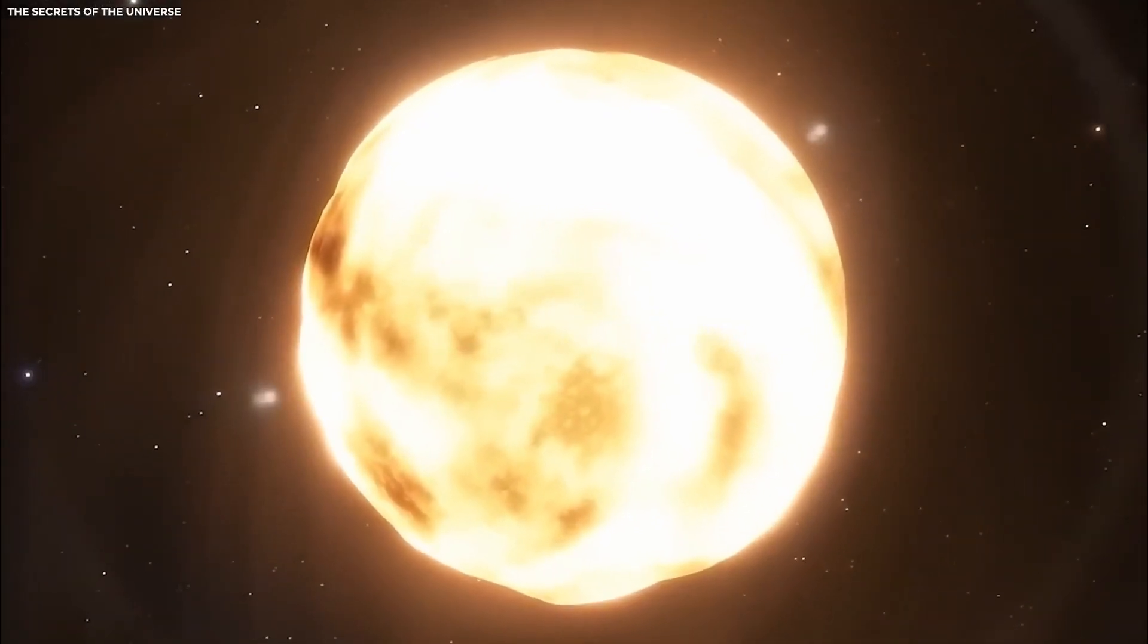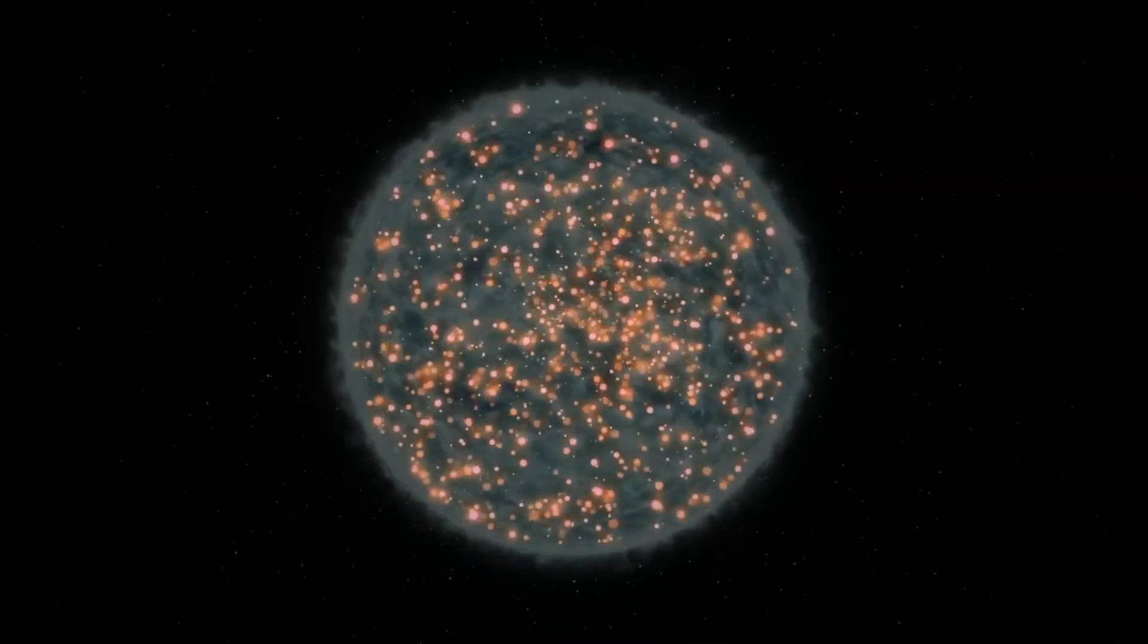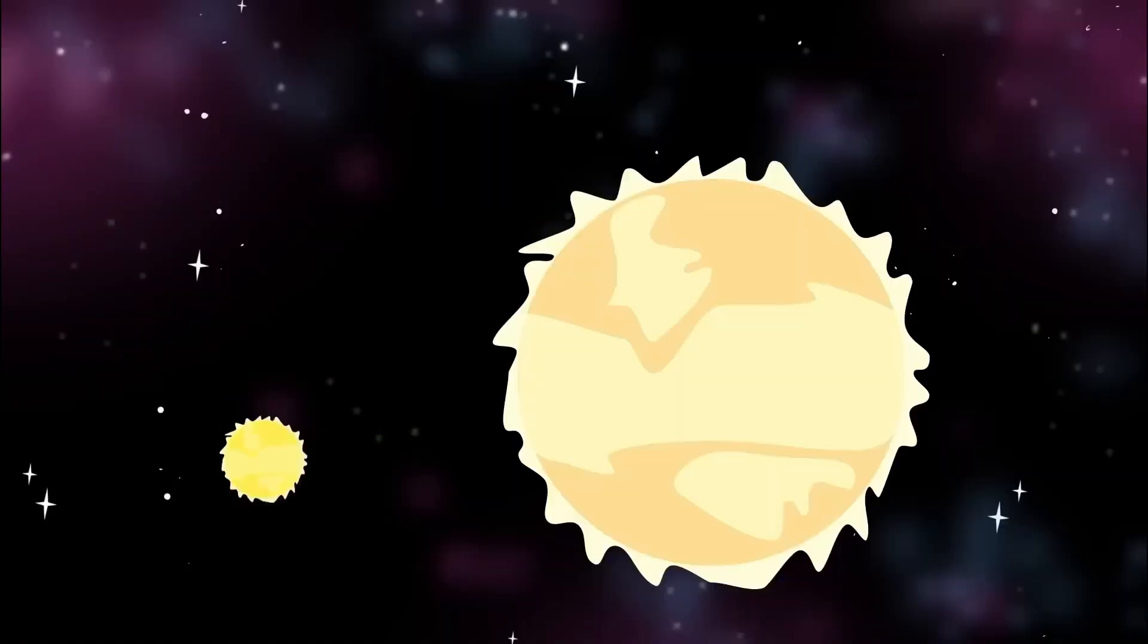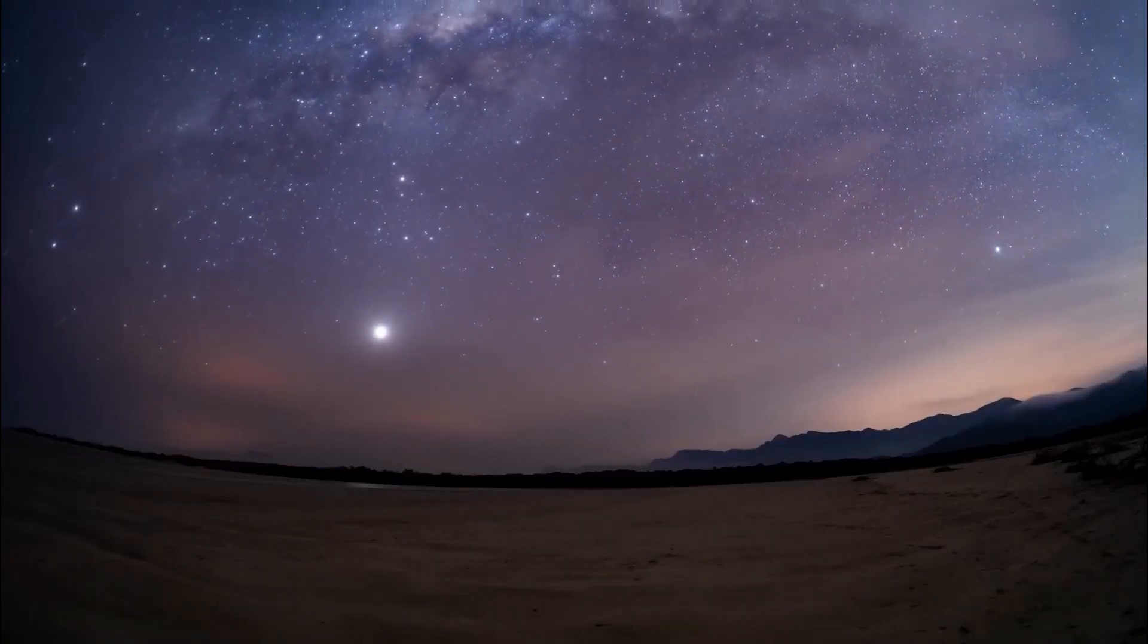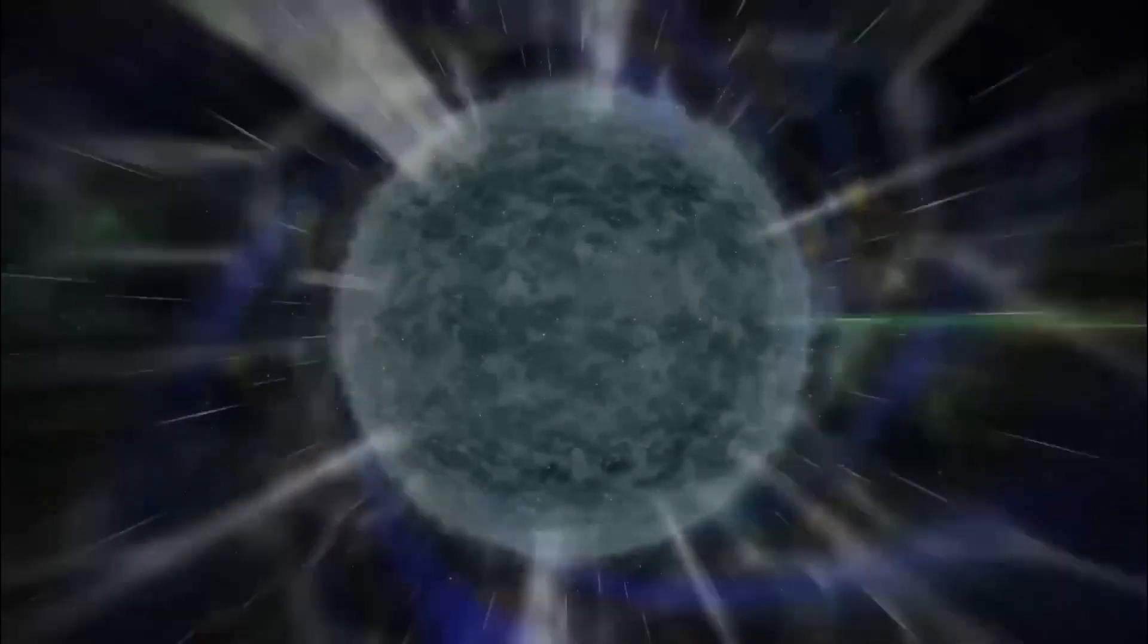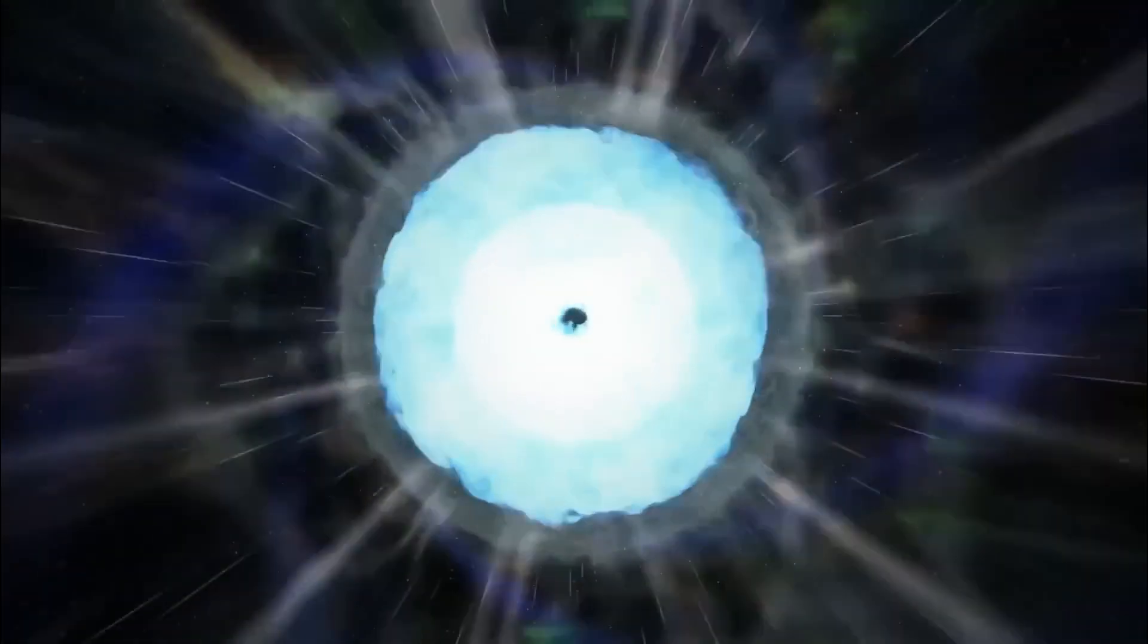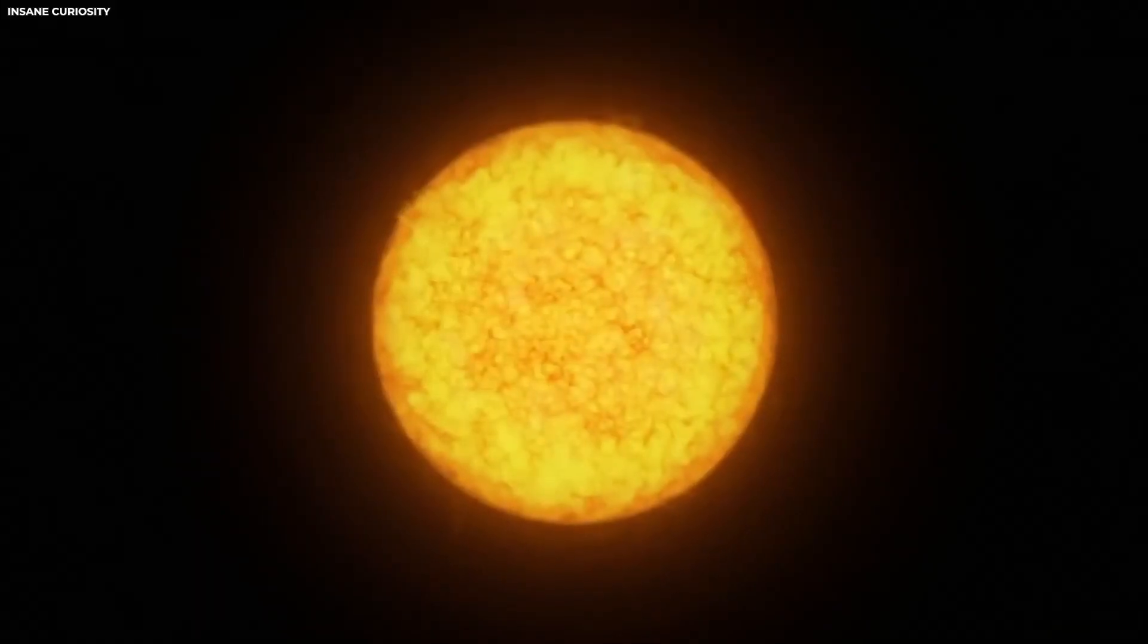This process involves a complete collapse of the core in a high-mass star, which has to be around eight times the mass of our Sun. When such a star exhausts its nuclear fuel, it can no longer support itself against its own gravity, causing its core to collapse. This collapse triggers an intense shockwave that races outward, causing the star to explode violently.